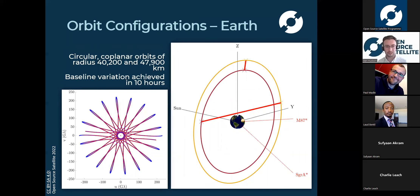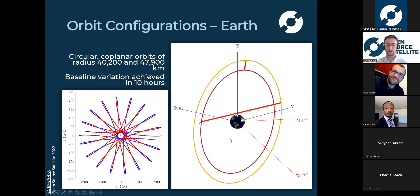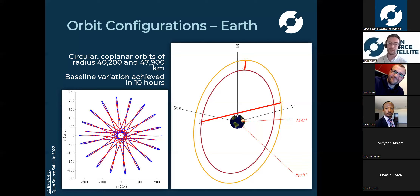I came up with various orbit configurations that could be used for this application. The first configuration is based in Earth orbit. You could have two circular coplanar orbits of around 40,000 to 48,000 kilometer radius, as shown on the right - both spacecraft orbiting the Earth in opposing directions. Over time the distance between the two spacecraft - shown by the red line going from shortest to longest - varies over about a 10-hour period, achieving the variation in distance needed to detect the photon rings on the target. This configuration achieves a resolution far superior to that of the EHT and we're quite close to the Earth relative to the other configurations.